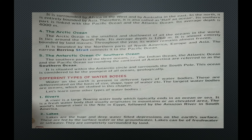The Arctic Ocean is the smallest and shallowest of all oceans in the world. It lies around the North Pole with an average depth of 1,260 meters. It is almost entirely bounded by land masses, and its water remains almost frozen throughout the year. It is bounded by the northern parts of North America, Europe and Asia. The narrow Bering Strait connects it to the Pacific Ocean.